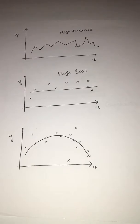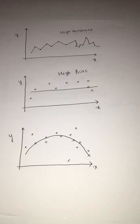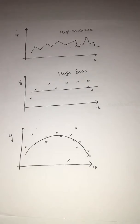In the first graph, what you see is a model with high variance. The model has actually fit to each and every data point. So even though your bias is low in the first case, the problem is it has very high variance — the model is fit to each and every point of the training dataset. This is not what we want. We want a model which generalizes well and performs similarly even on data it has not seen before.